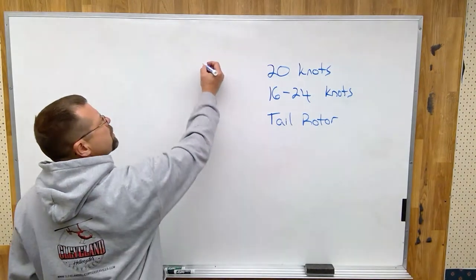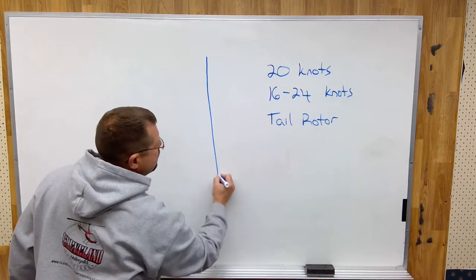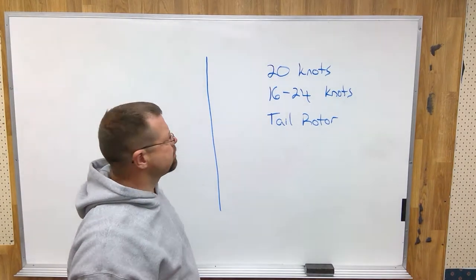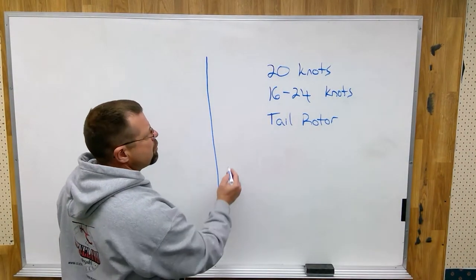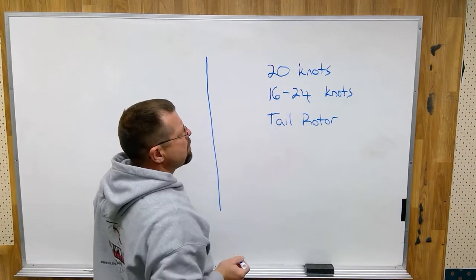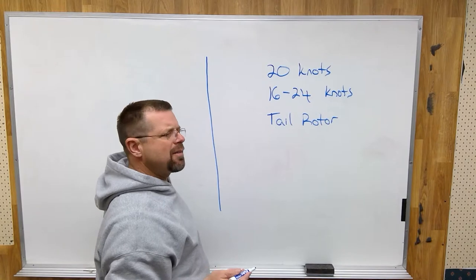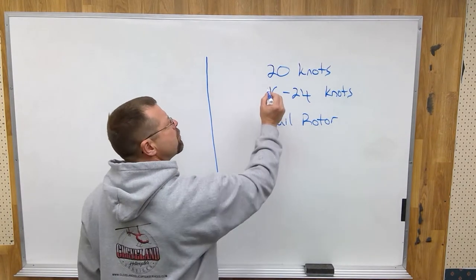So let's put this together in a takeoff scenario. Helicopter takes off, approximately 20 knots according to the helicopter flying handbook, slight vibration, aircraft rolls to the right.